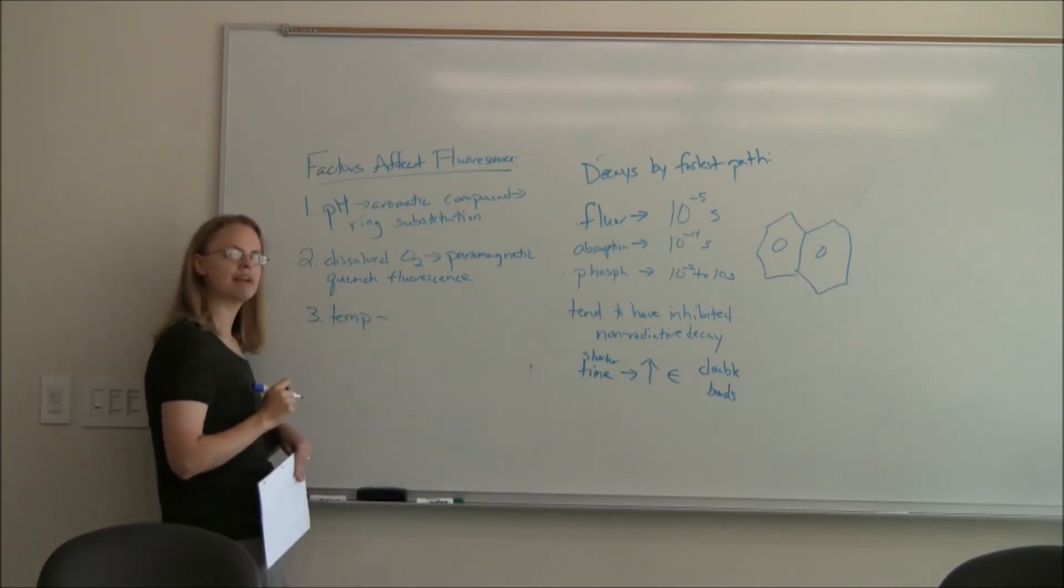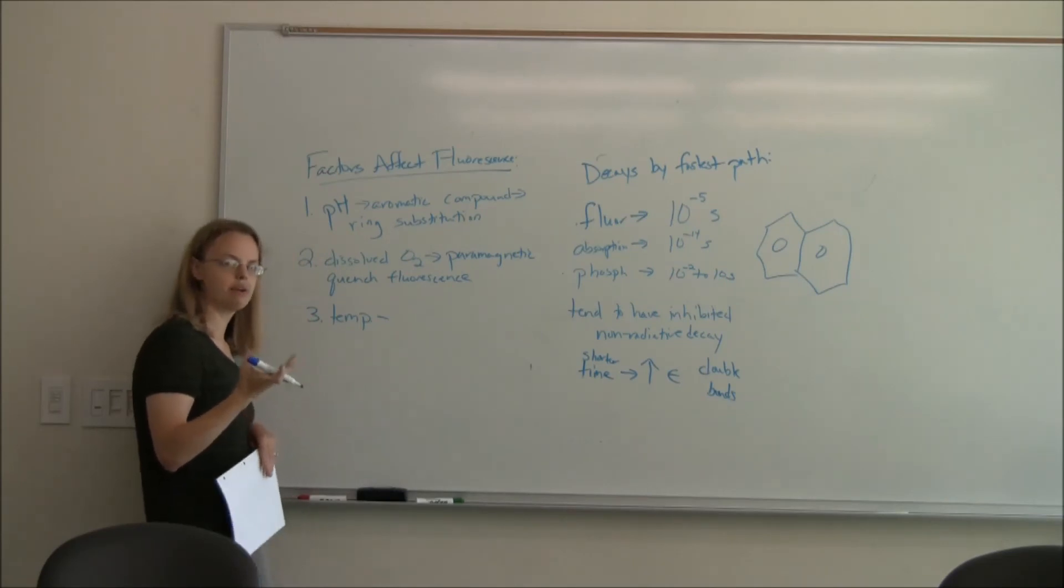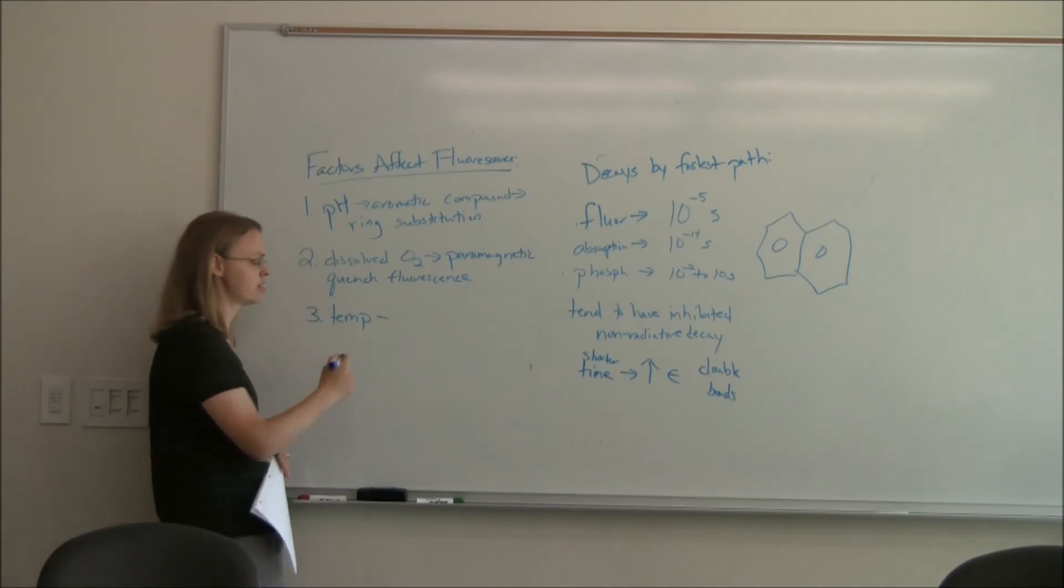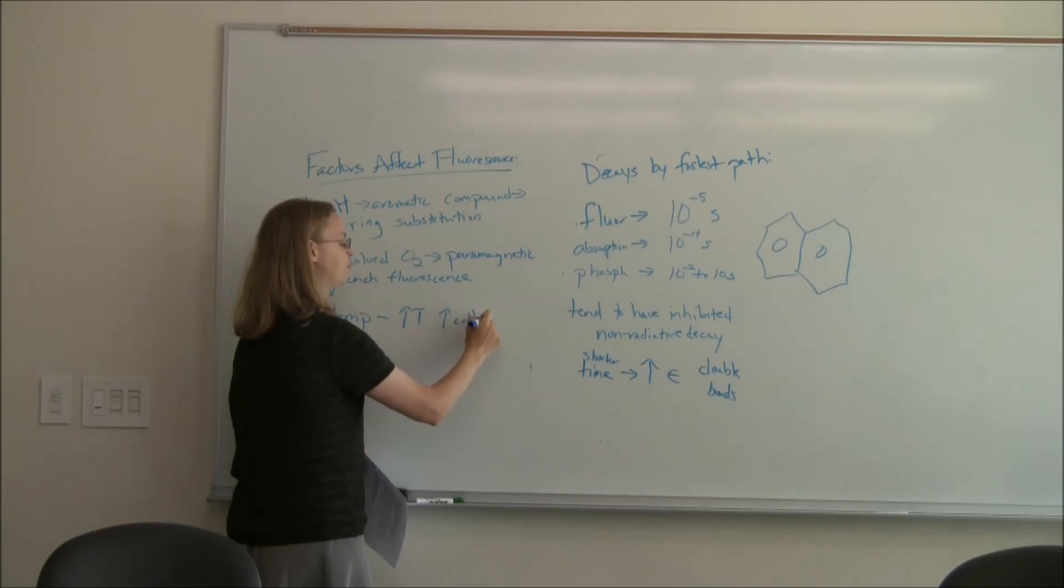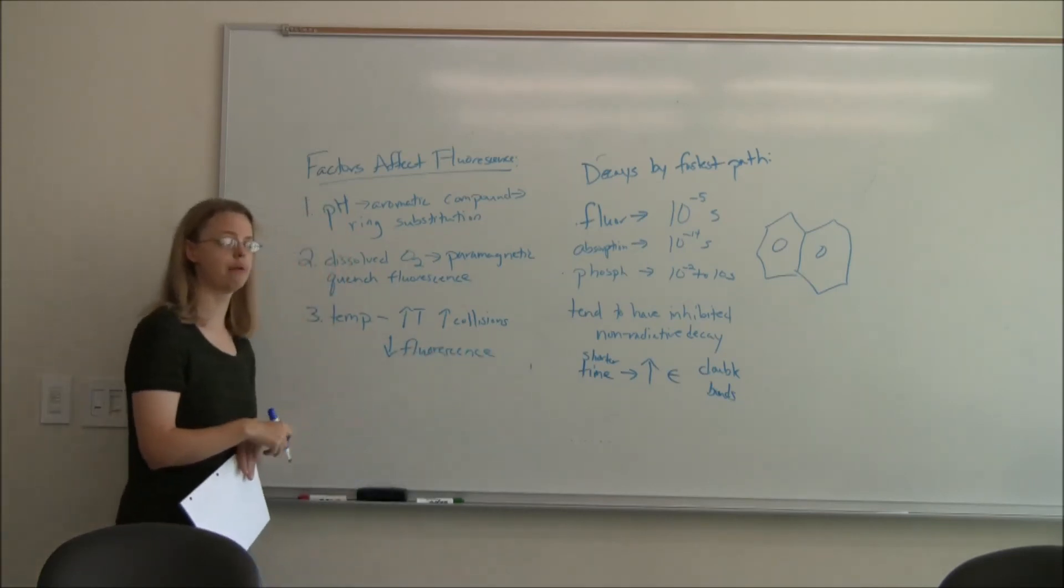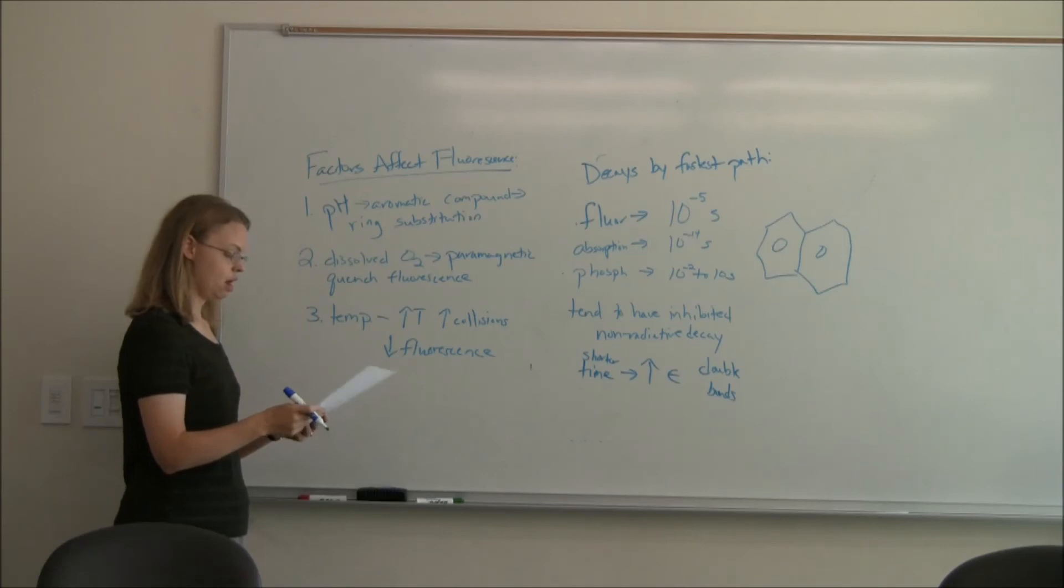And then temperature is the last one. Think about it for a minute. I told you that one of the best ways to go back to ground if you're going to do it non-radiatively is to bump into your neighbor. Well, if I increase the temperature, I'm going to increase the energy of the molecules. They're going to have more collisions. So increasing the temperature gives you increased collisions, which gives you decreased fluorescence. If you really want to do good fluorescence, you probably want to do it at a low temperature.